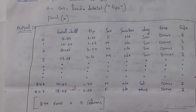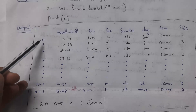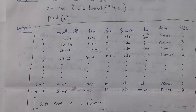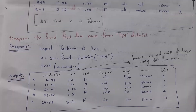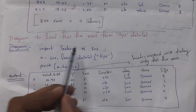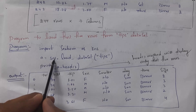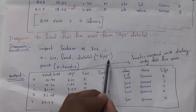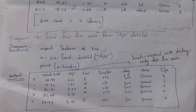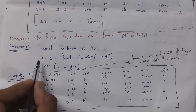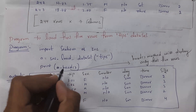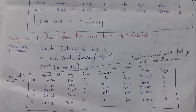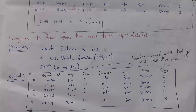I will explain one more program. This time I don't want to see all 244 rows — I want to see only the first 5 rows, that is from index number 0 to index number 4. Same as the previous example: import seaborn as sns, take variable A equal to sns.load_dataset('tips'), then write print(A.head()). The head() function will display only the first 5 rows, from index 0 to index 4.